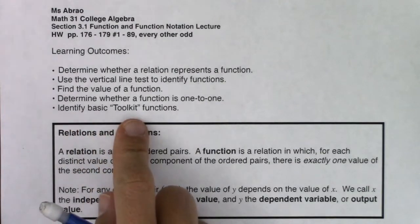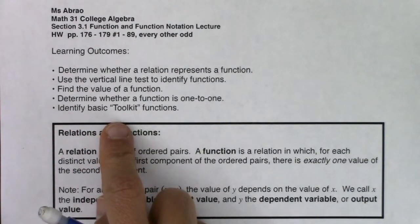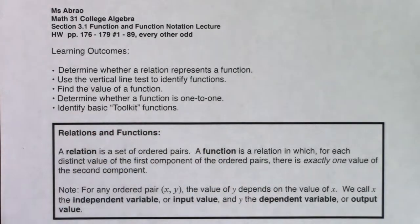I want us to look at our basic toolkit functions that are in your book, and I'll reference that once we get to that last learning outcome. So let's dive in. A relation is a set of ordered pairs. A function is a relation in which for each distinct value of the first component of the ordered pairs, there is exactly one value of the second component.